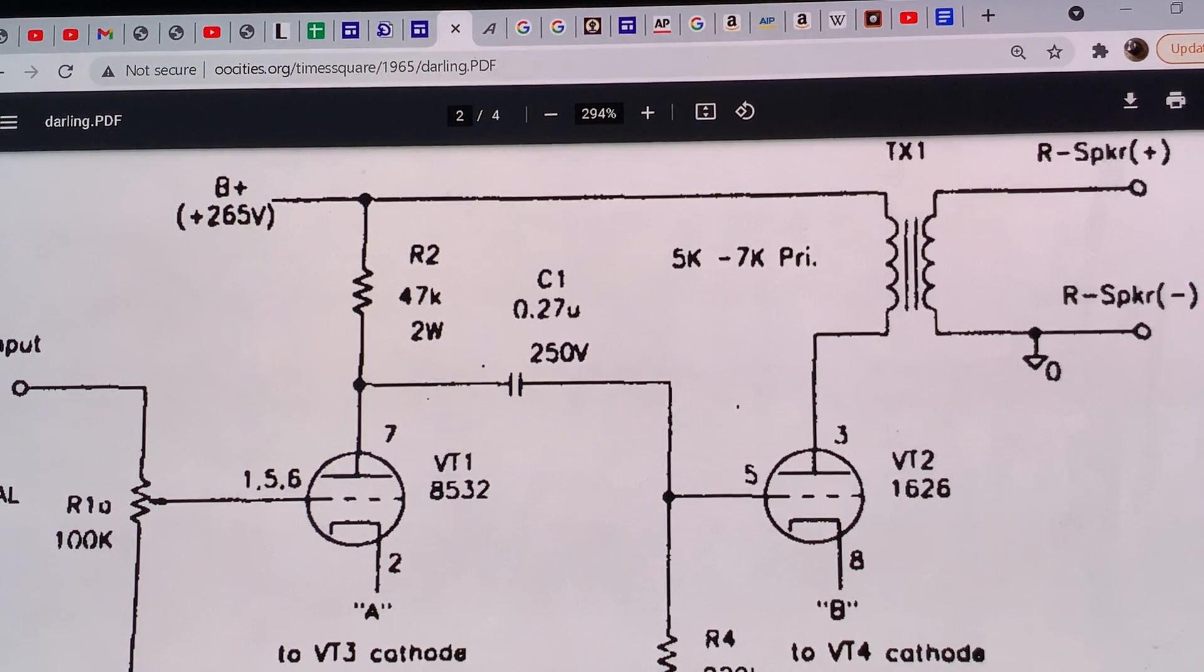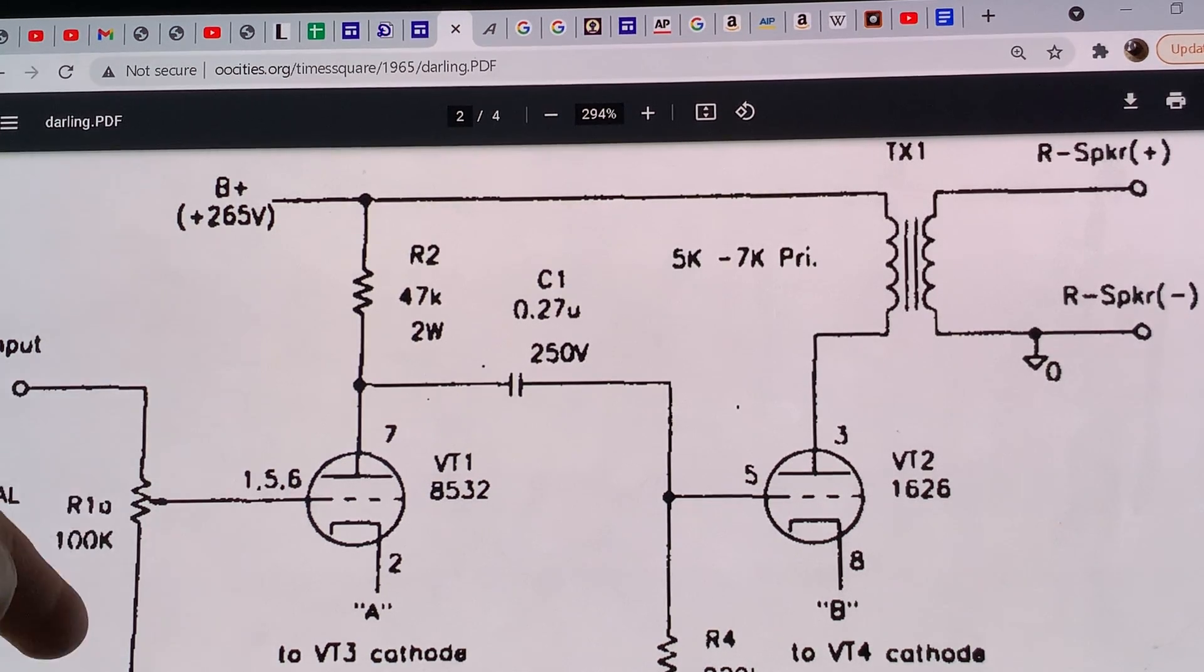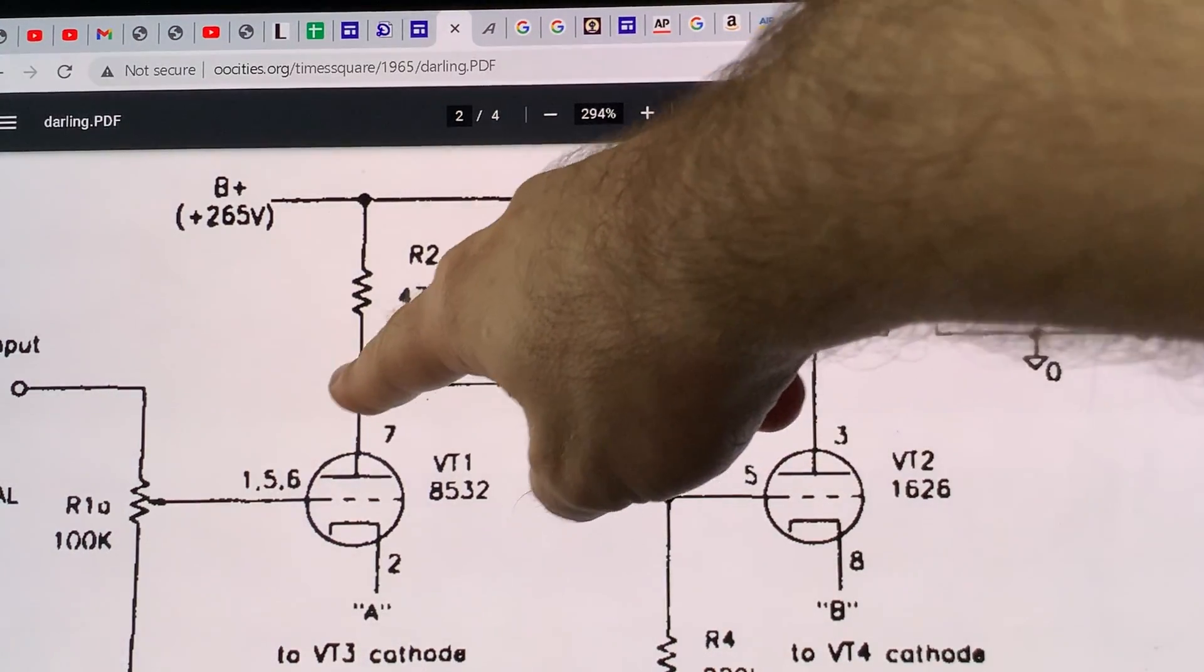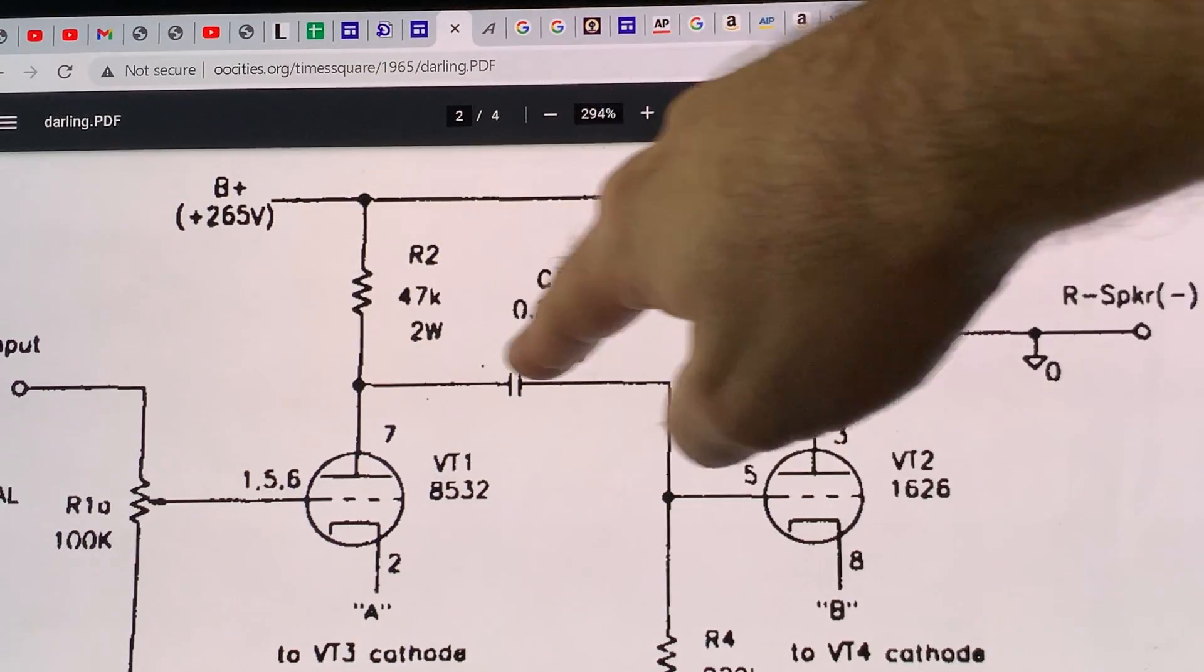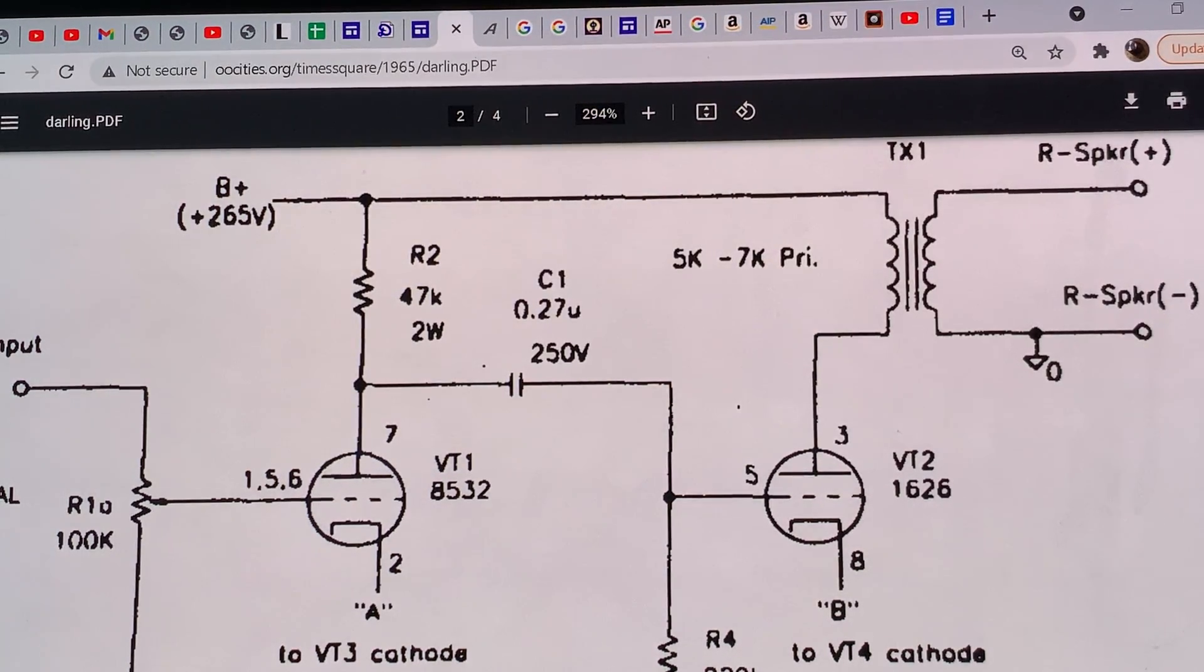If you have a dedicated preamplifier, then instead of this volume control, we will put there a resistor. I would suggest something between 100k to 200k to use there instead of this pot. And then here, this is the output of the vacuum tube, and that will be a capacitor.